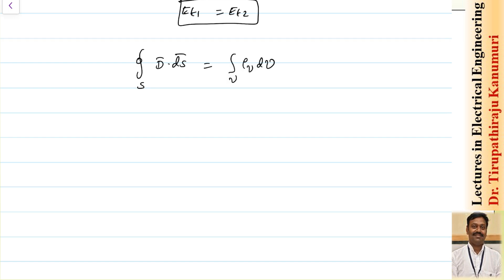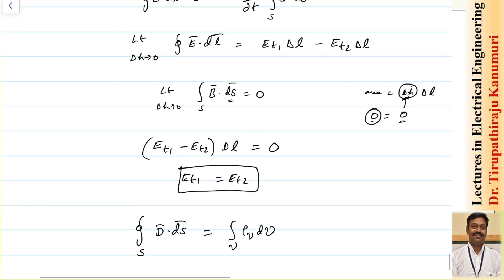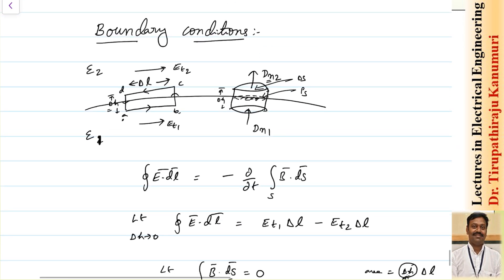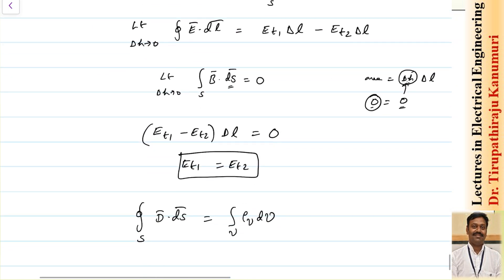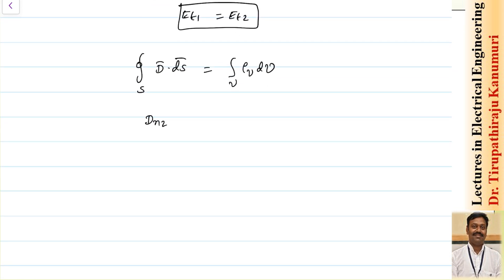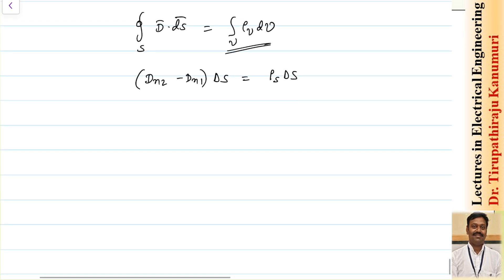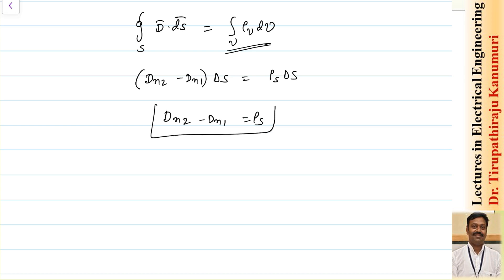As delta h tends to 0, the side contributions become 0; only the top and bottom remain. On the top, the surface direction is the same as dn2, while on the bottom it is opposite to dn1. So dn2 is taken as positive and dn1 as negative. This gives dn2 minus dn1 multiplied by delta s equal to the volume integral of rho v dv, which equals rho s multiplied by delta s, yielding dn2 minus dn1 equal to rho s.